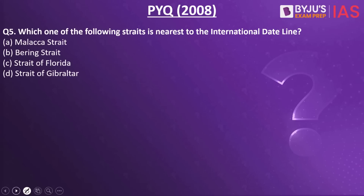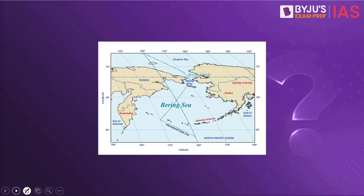Which of the following is nearest to the international dateline — the Strait of Malacca, the Bering Strait, the Strait of Florida, or the Strait of Gibraltar? The answer is the Bering Strait. If we look into the map, the international dateline runs close to the Bering Sea, and the strait present there is the Bering Strait. This happens to be a previous year question from the year 2008.